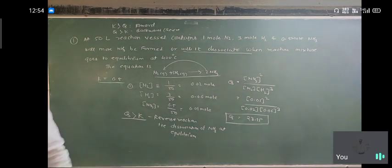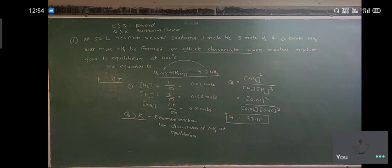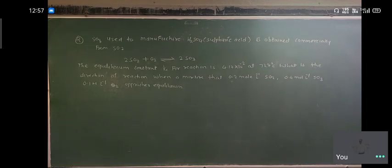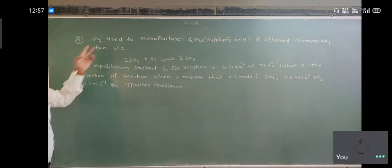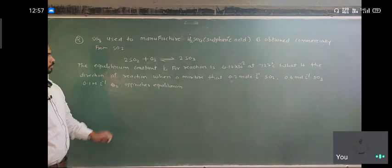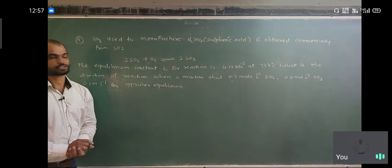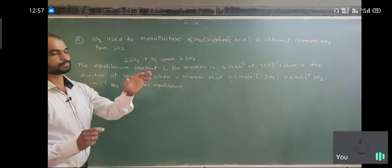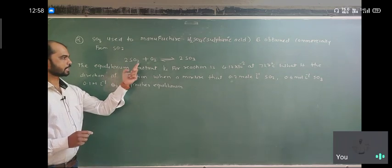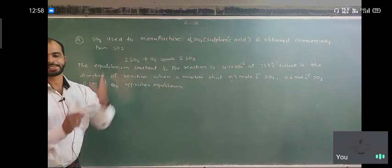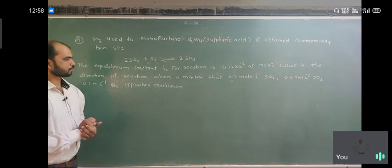Okay, the second problem is given to you. SO3 used to manufacture H2SO4 is obtained from SO2. The reaction is given: 2 SO2 plus O2 yields 2 SO3. The equilibrium constant Kc for the reaction is 4.17 into 10 raised to minus 2 at 727 degrees Celsius.